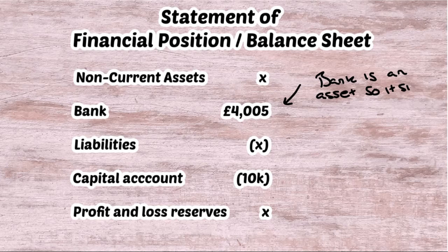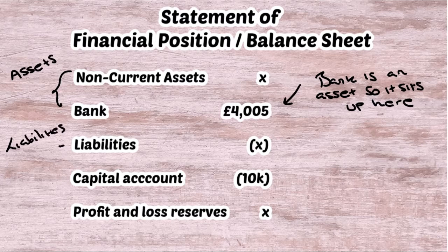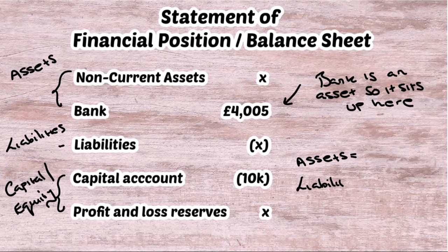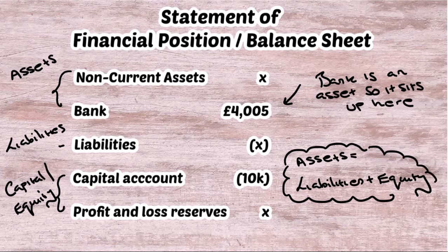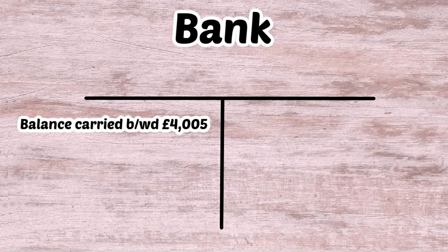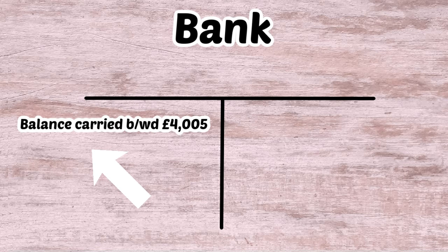Below the assets you'd have liabilities, your capital account of £10,000, and the profit and loss reserves. The accounting formula is assets equals liabilities plus capital or equity. If we carry the bank balance forward into the next year, the balance brought forward of £4,005 appears on the left hand side of the bank T account because it's still a positive balance — an asset.